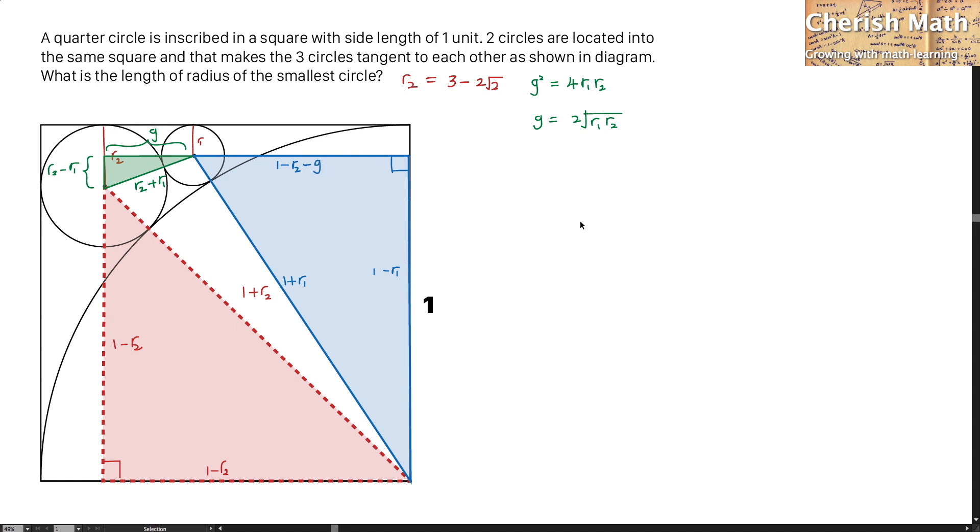I'm now going to work out an equation based on this blue triangle. And it is the third time for the Pythagoras theorem to be used up. Now, for this part, I will have to use 1 minus R2 minus G. And I'm going to retain this information in the form of 1 minus R2. While this part and this part is the expansion of the previous equation.